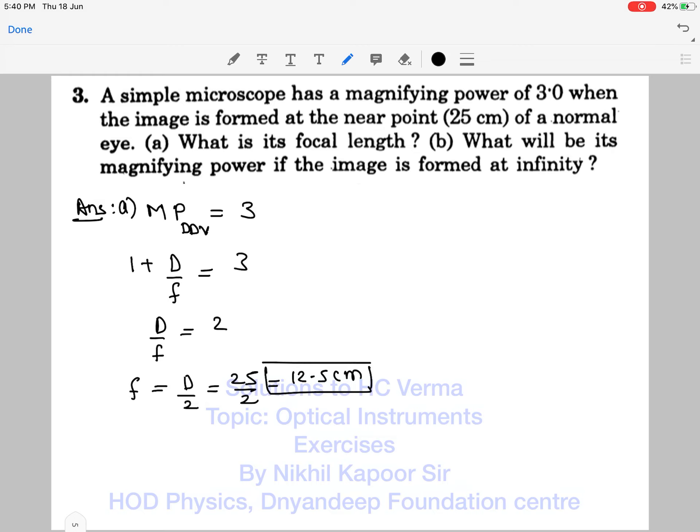This is the first case. What will be its magnifying power if the image is at infinity? When the image is at infinity, the magnifying power is simply D/f, which is nothing but 3 - 1, so that comes out to be 2. Thank you.